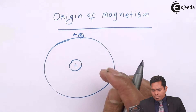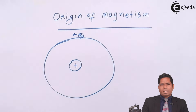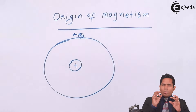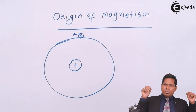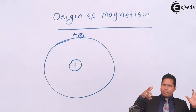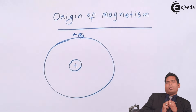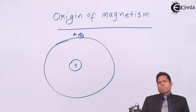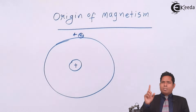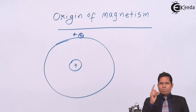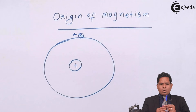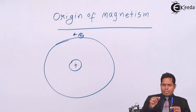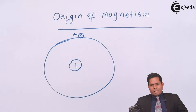In an atom there might be many electrons revolving, and in a substance there might be many atoms. In fact, many electrons are revolving around the nucleus. In each atom, we know that the electrons are doing two things: one is it revolves or rotates around the nucleus, and it also spins about its own axis. The electron moves around the nucleus and at the same time it also spins about its own axis, just like the Earth spins about its own axis.